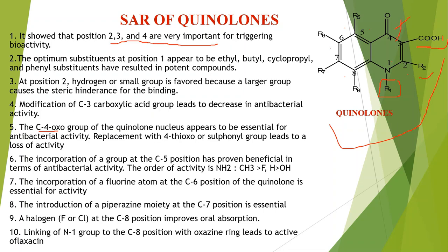Replacement of the C4 oxo group with a thioxo or sulfonyl group leads to loss of activity. If we replace the oxo with sulfur (SH), thioxo, or SO2Cl groups, activity is reduced. This confirms that the oxo group is essential for broad-spectrum antibacterial activity.